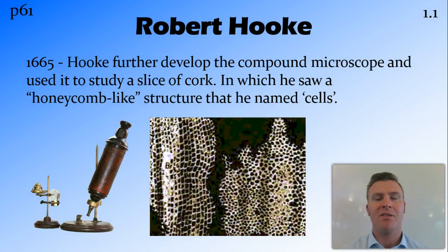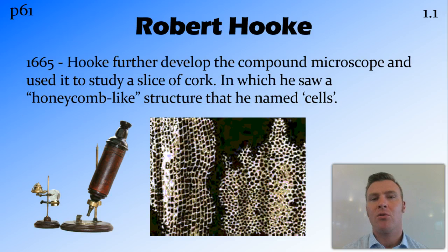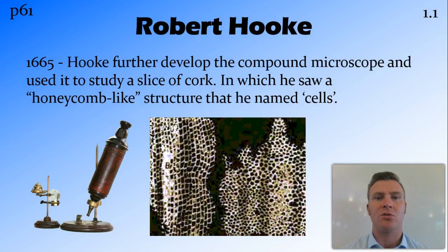By 1665 this microscope had been further developed. A man named Robert Hooke was using his microscope to look at some thin slices of cork. When he looked at the thin slices of cork he noticed a honeycomb-like structure. It reminded him of the cells that monks sleep in — their rooms, little tiny boxes. So he decided to call these things that he saw cells.